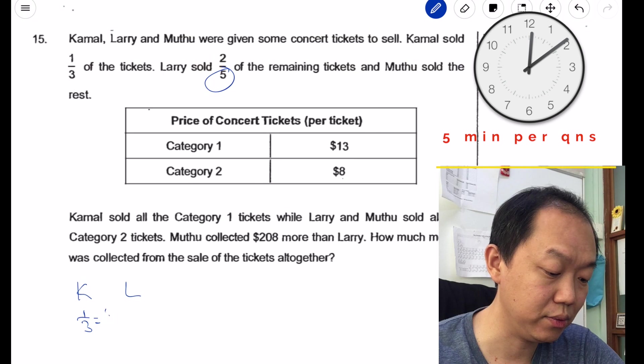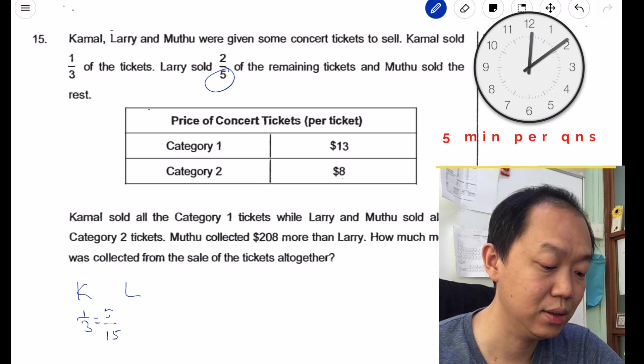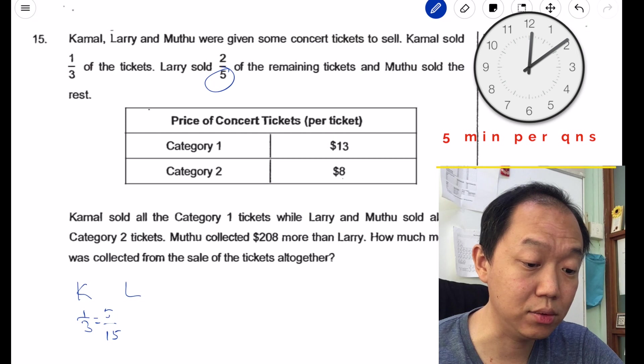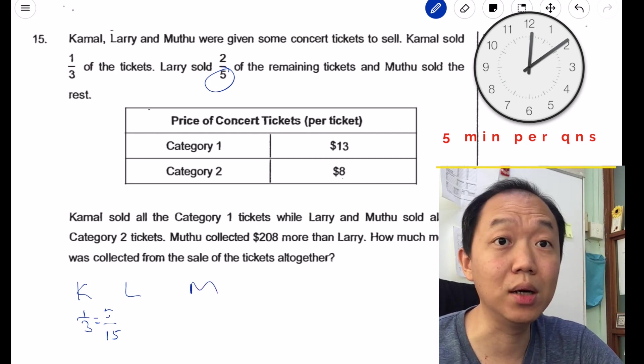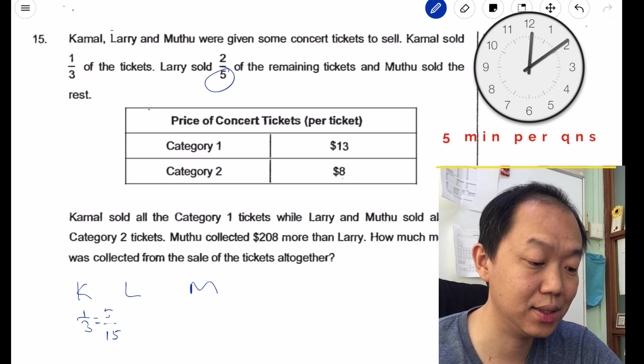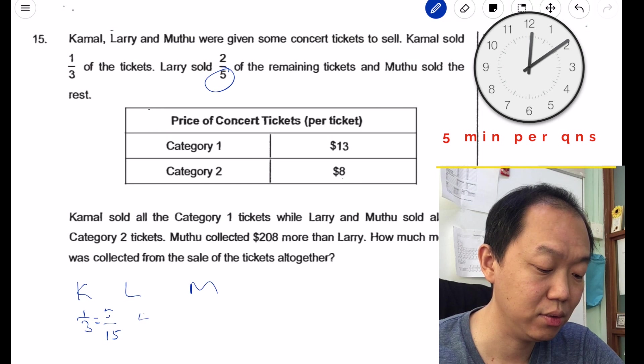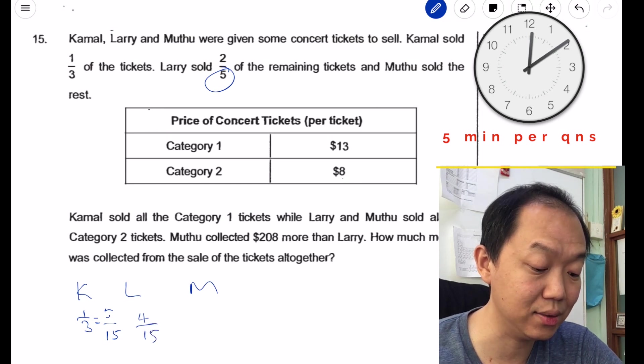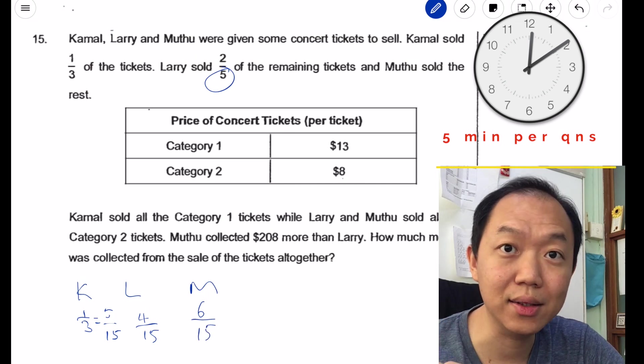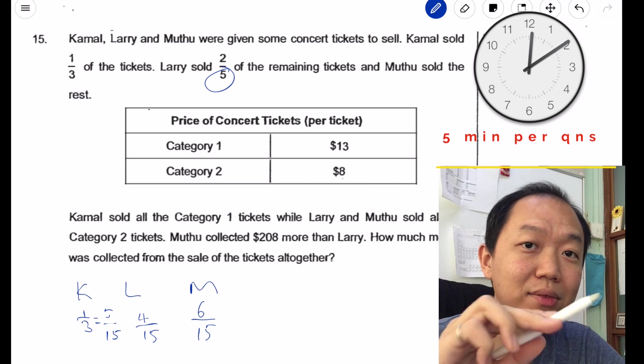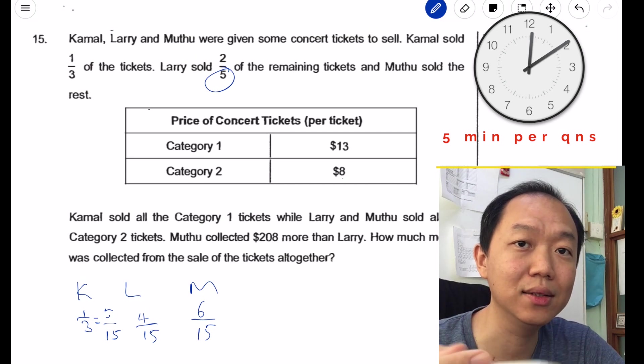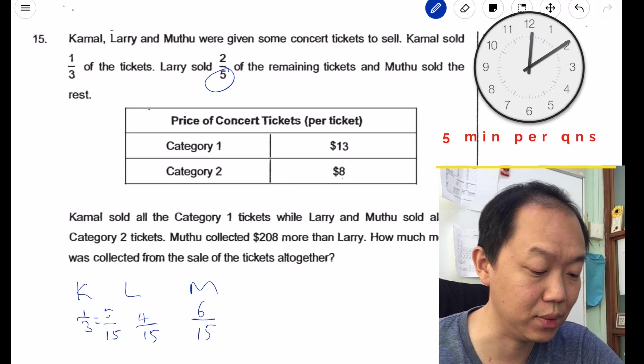To get a common multiple of 10, I got to multiply the first ratio by 5. So here is five over fifteen. Larry and Mutu had ten units. So if Larry sold two fifths out of ten, that means this is four out of fifteen, and Mutu is six out of fifteen. If you don't get it, you can go back, rewind the video, listen to what I said, and do it again. This is actually a remainder concept.